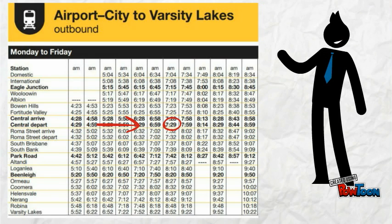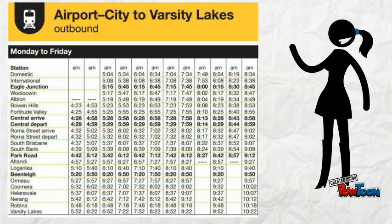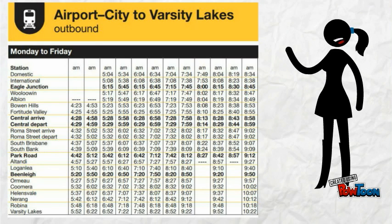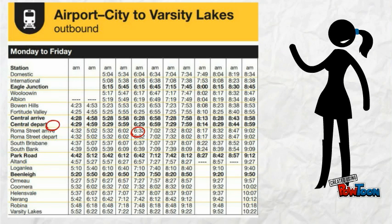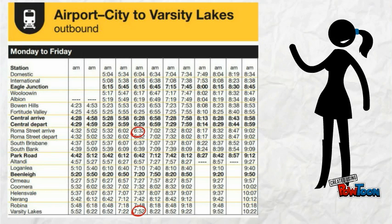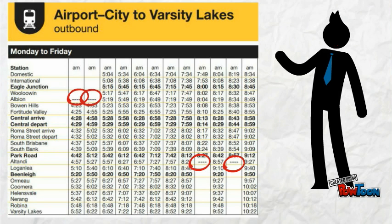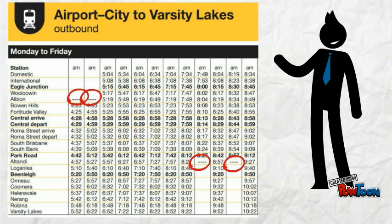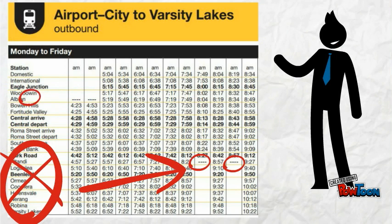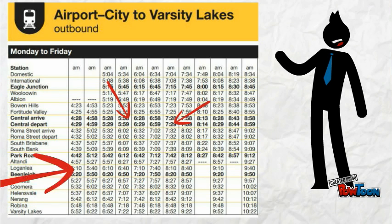This timetable is an Airport City to Varsity Lakes timetable. I can see that the train I want to catch arrives at Brisbane Central at 6:29 a.m. The next stop is at Roma Street Station at 6:32 a.m. and will arrive at Varsity Lakes at 7:52 a.m. The other important thing you will notice on this timetable is that there are dashes or blank spaces. This means that the train does not run to these stations. Wherever you see a time, you know the train will run to that particular station.